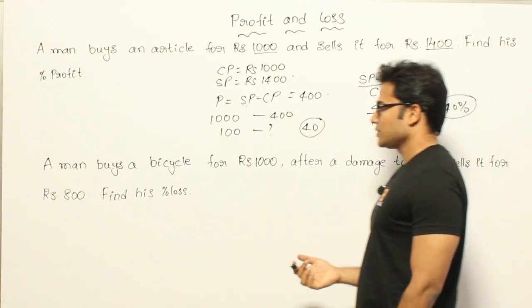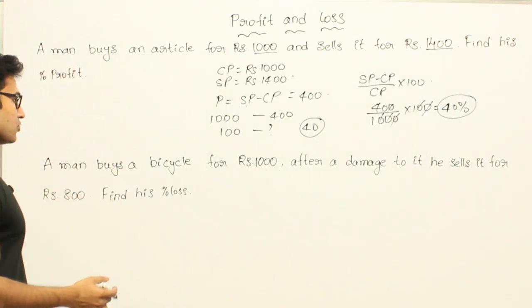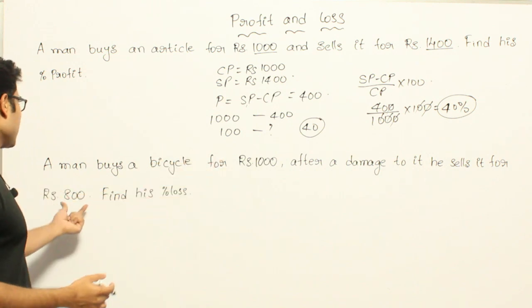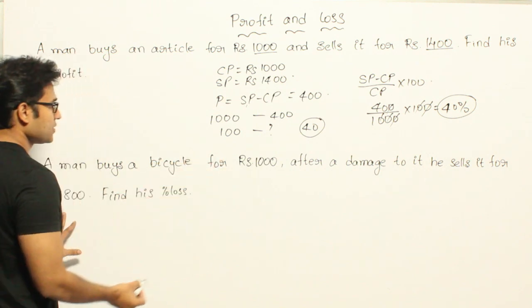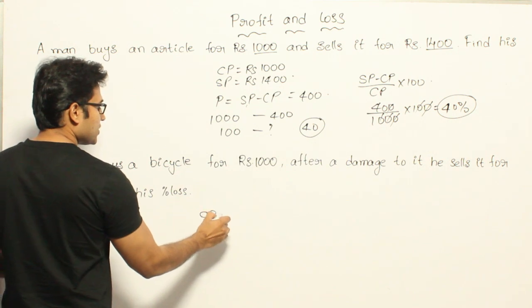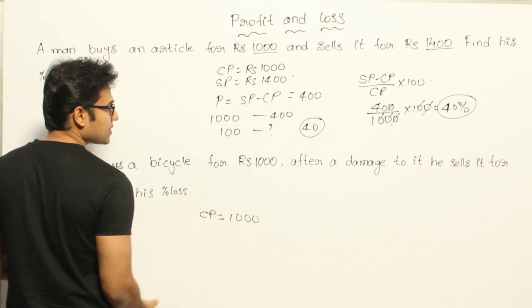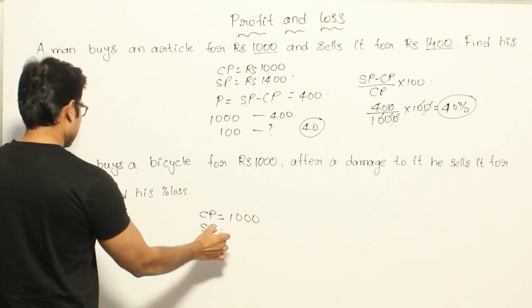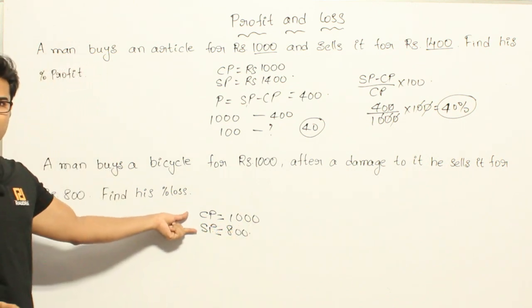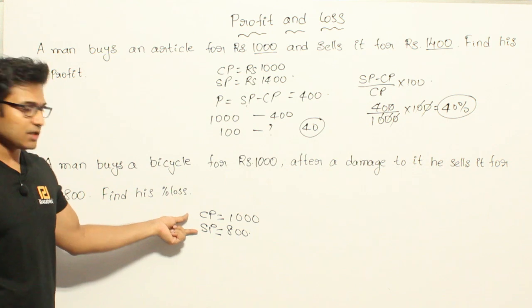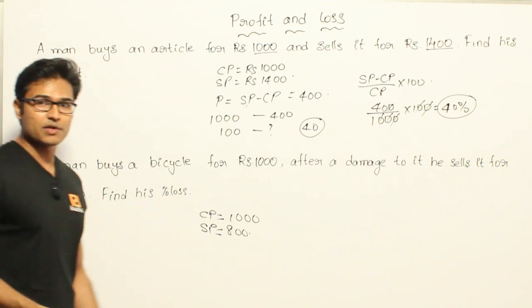Now similarly for the second question. A man buys a bicycle for 1000 rupees and after some time sells it for 800 rupees. Find the loss percent. The cost price, meaning his investment, is 1000 rupees and the selling price is 800 rupees. He is selling at a lower price than his investment, therefore there is clearly a loss.